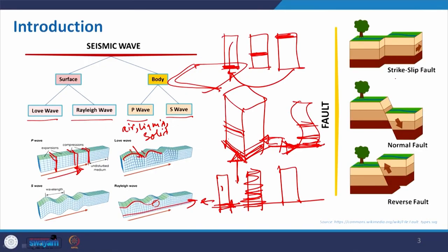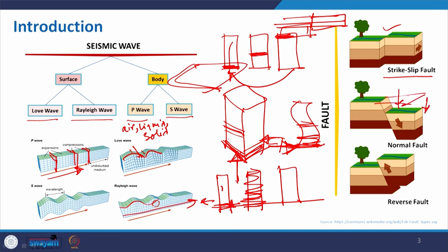The fault is basically the deformation or displacement of the earth's surface. In a strike-slip fault, a portion slides horizontally on each other — like a river that gets displaced. In a normal fault, some portion sinks from its actual level. In a reverse fault, the portion slides up at a certain angle, creating an increase above the original level. These are the different effects during an earthquake.